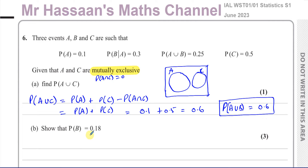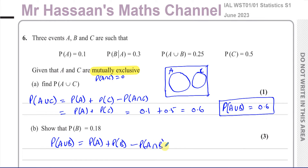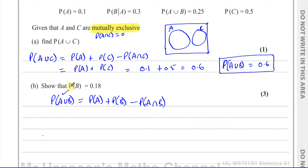For part B, we need to show that P(B) = 0.18. We know P(A∪B) is given as 0.25. Using the same formula: P(A∪B) = P(A) + P(B) − P(A∩B). We know P(A∪B) = 0.25 and P(A) = 0.1, but we still need to find P(A∩B).